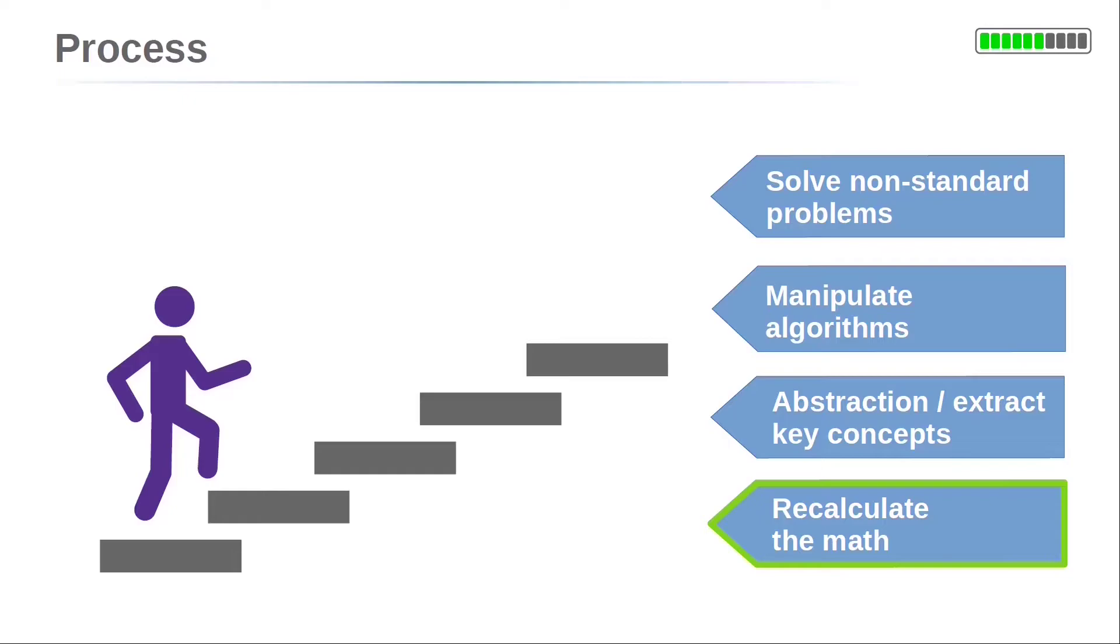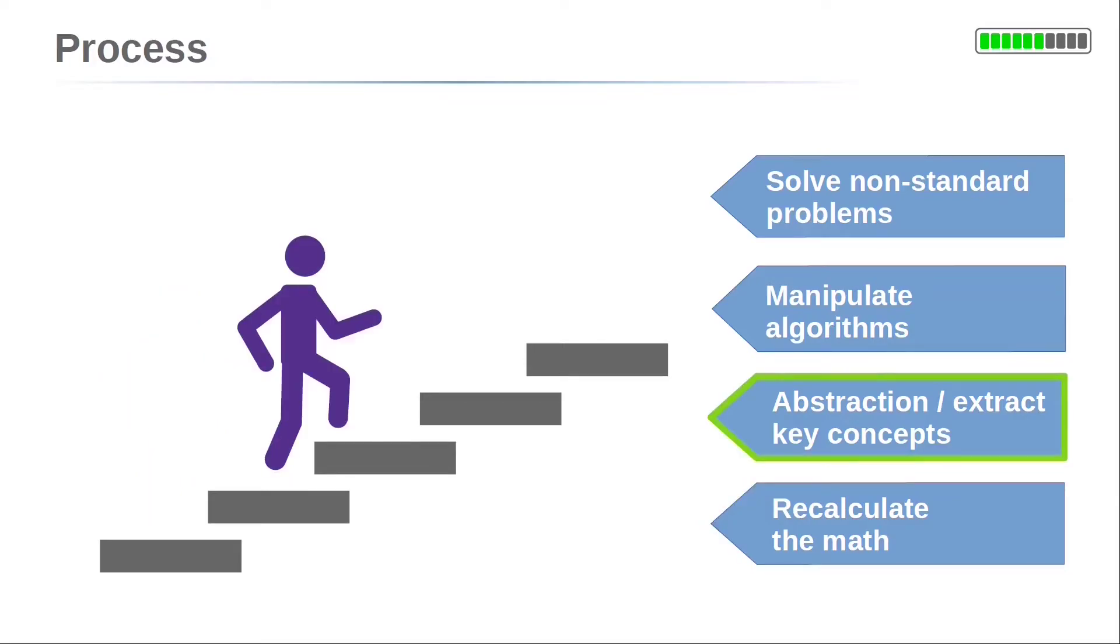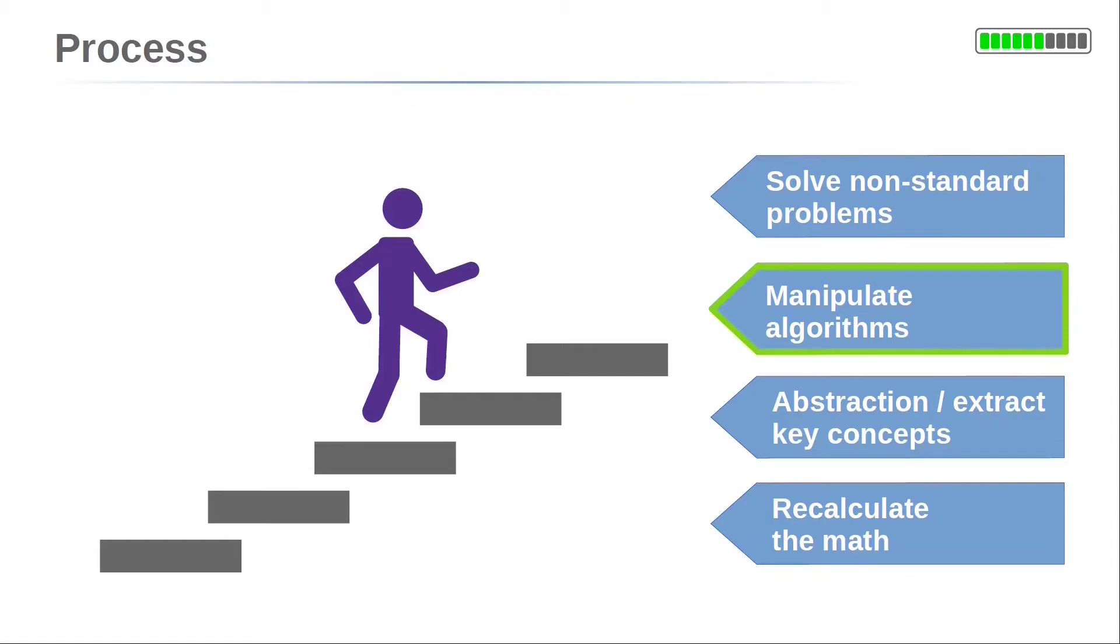In this course, we first want to know how machine learning works. This is done by reconsidering the mathematical theory of the algorithms. Then, it is important to extract the basic key concepts from the mathematical theory. This process of abstraction gives you a deeper understanding. We will find out how to manipulate the algorithms to a desired behavior.